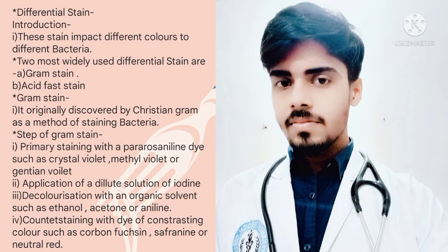Gram staining was originally discovered by Christian Gram as a method of staining bacteria. The steps of the Gram staining procedure are: first, primary staining with a pararosaniline dye such as crystal violet, methylene blue violet, or gentian violet. Second, application of a dilute solution of iodine. Third, decolorization with an organic solvent such as ethanol, acetone, or aniline. Finally, contrast staining with a dye of contrasting color such as carbol fuchsin, safranine, or neutral red.